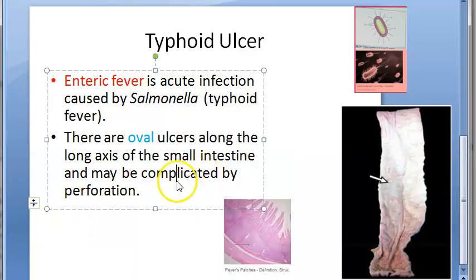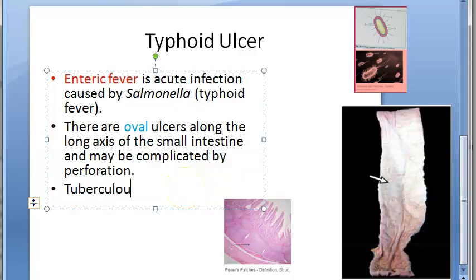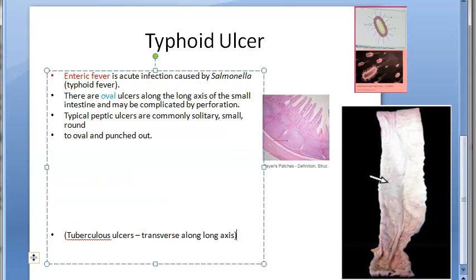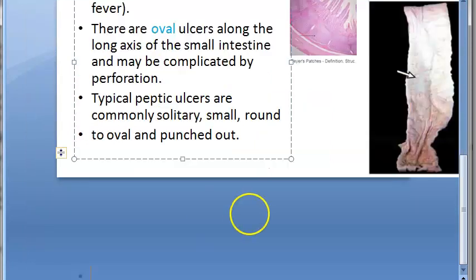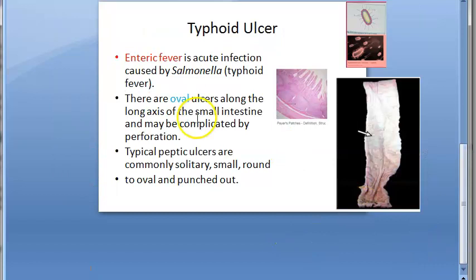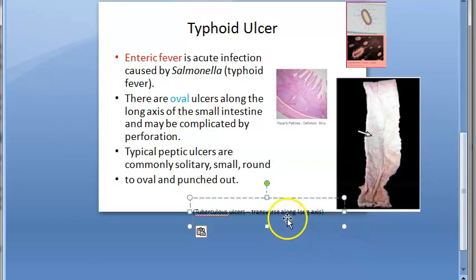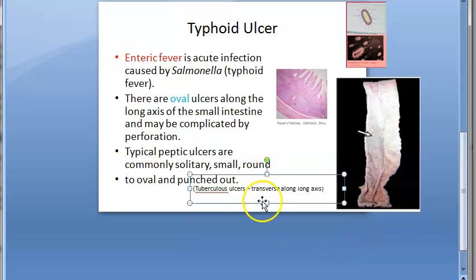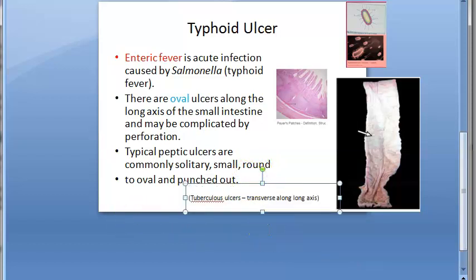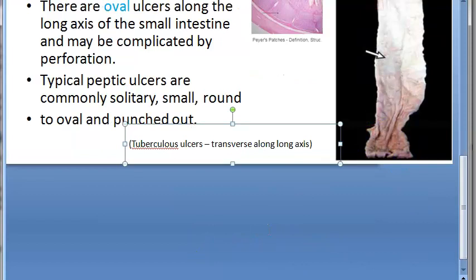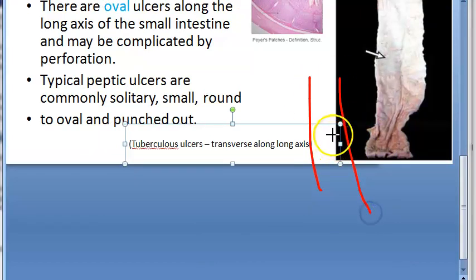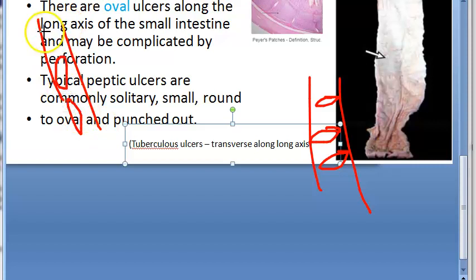One very important thing to note is tuberculous ulcers, caused by Mycobacterium tuberculosis. Those ulcers will be transverse along the long axis — so if this is the intestine, they will go across like this. These are the tuberculous ulcers. However, the typhoid ulcers we are discussing today will be oval along the long axis. These are typhoid ulcers; these are tuberculous ulcers.